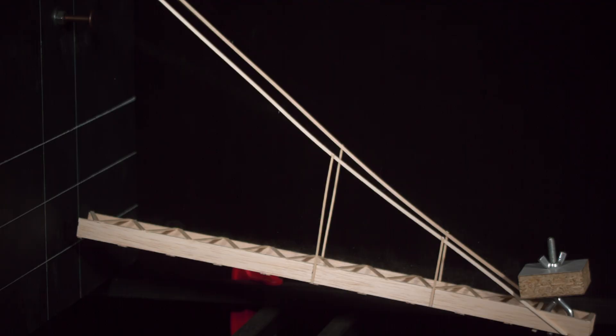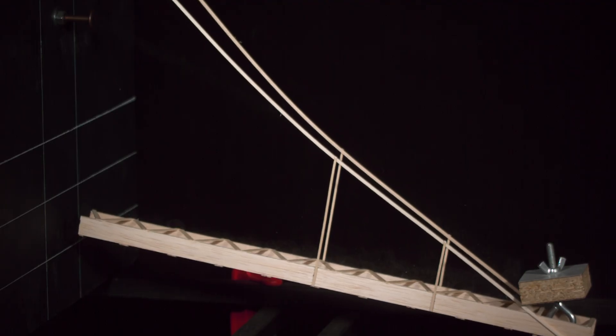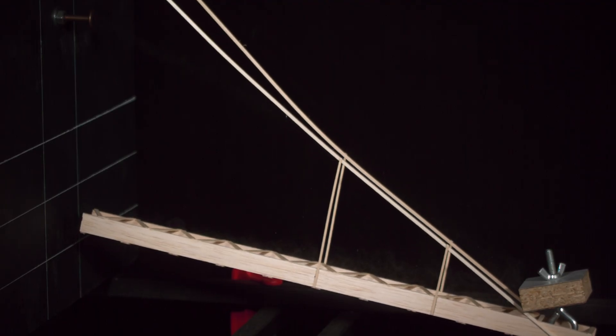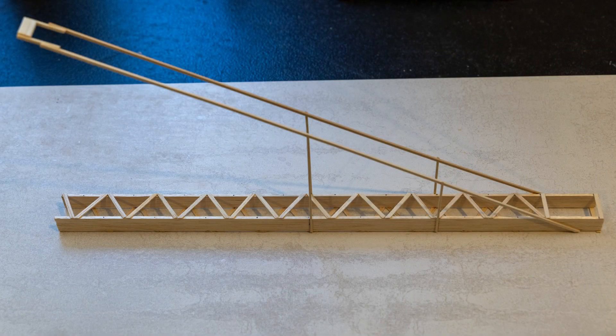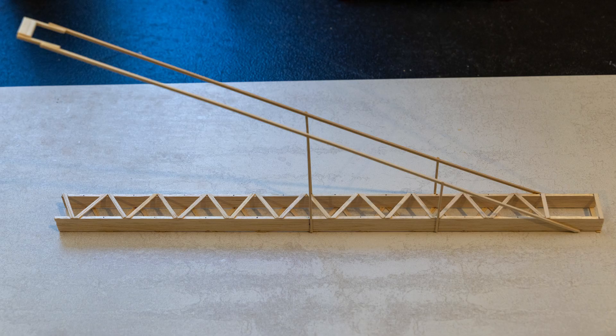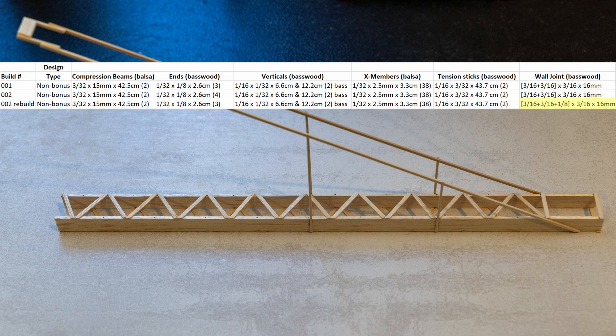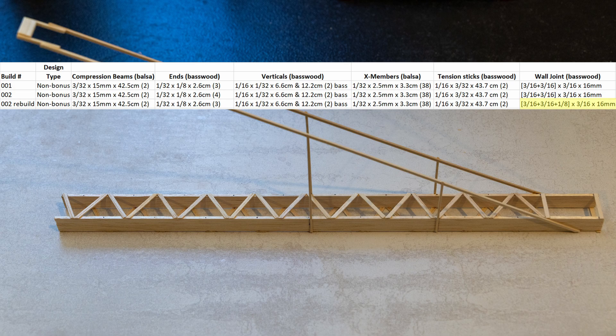The rest of the boomy survived this test with no damage, so for the next test I'm just going to splice on a stronger rebuilt tension bolt joint. Here is the exact same boomy as before, but as you can see I have spliced on a new wall joint. This time I'm using two 3/16 inch basswood pieces along with a 1/8 inch piece to make the contact with the tension stick a bit longer and stronger.